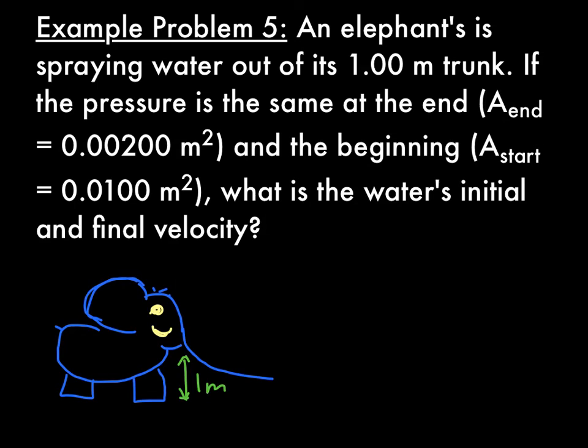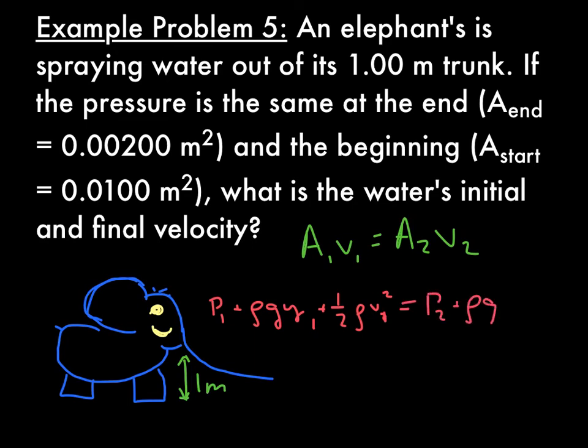Now, this problem is going to use two equations. One is the continuity equation. And if you remember, that is a1v1 equals a2v2. This is because we don't know the initial velocities and we're going to solve for them. The second is Bernoulli's equation, which is p1 plus rho gy1 plus 1 over half rho v1 squared equals p2 plus rho gy2 plus 1 over half rho v2 squared. This is just continuity of energy. So take a minute, write down these, and we'll see you at the continuity equation next slide.